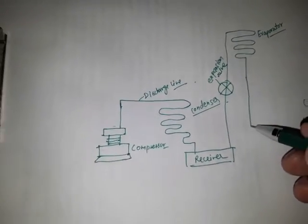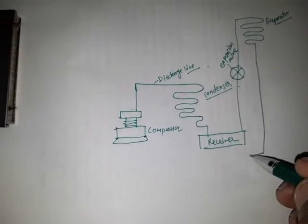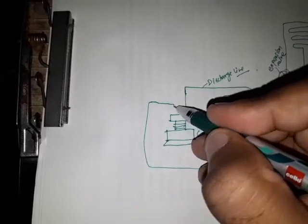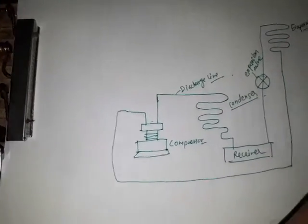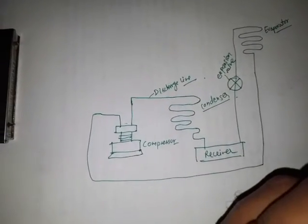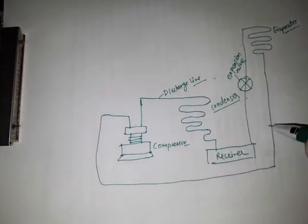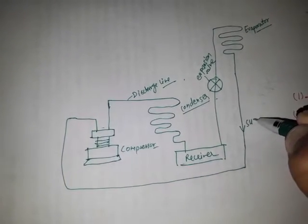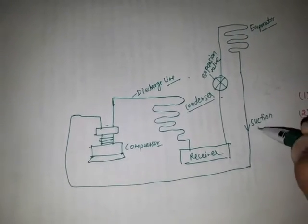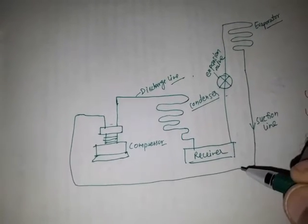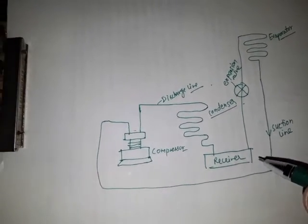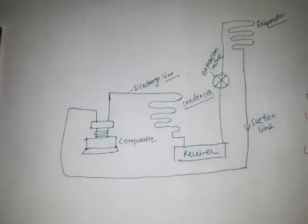From the expansion valve, the line goes towards the evaporator and then back towards the compressor. This return line is the suction line. So this is the overall arrangement of the vapor compression refrigeration system.